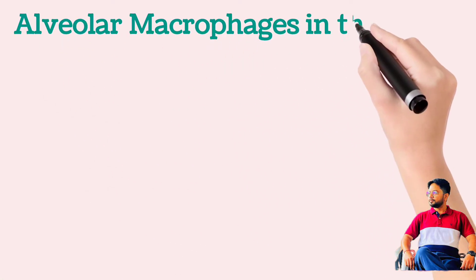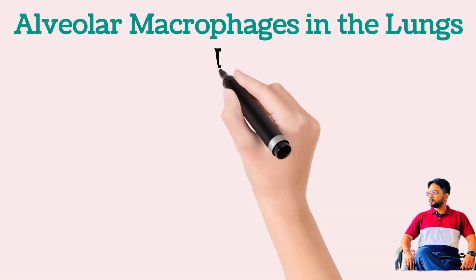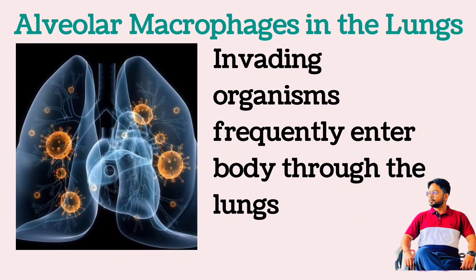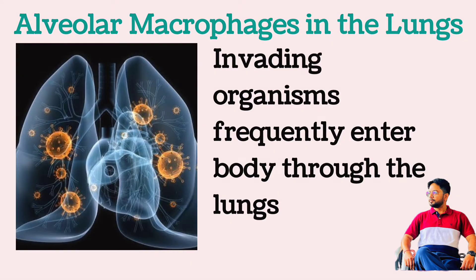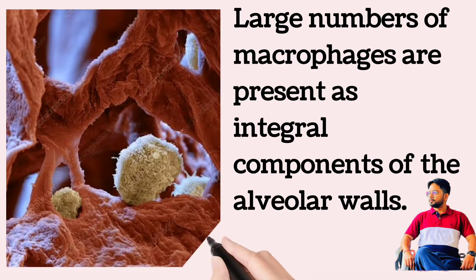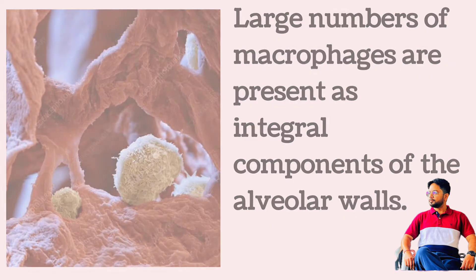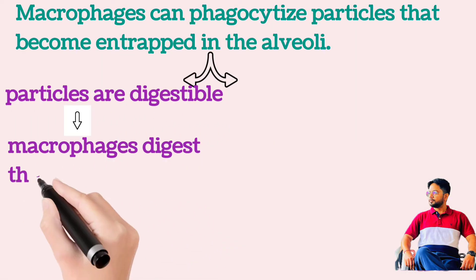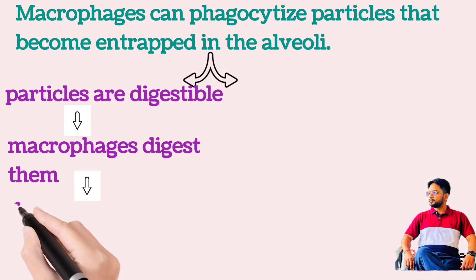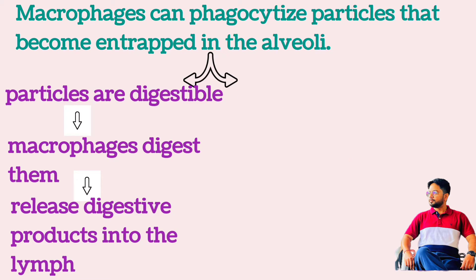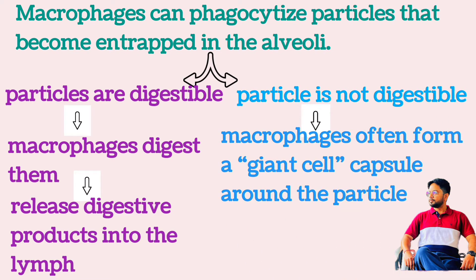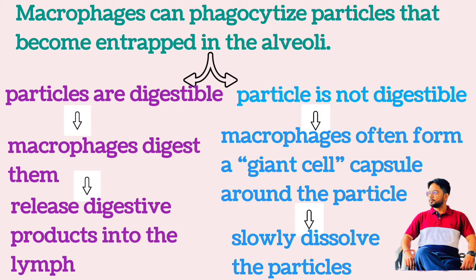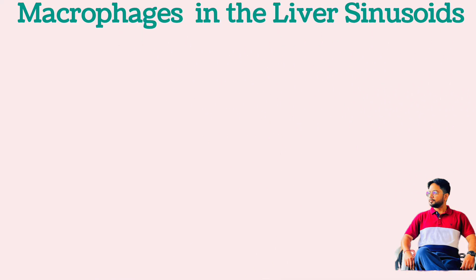Alveolar macrophages in the lungs: another route by which invading organisms frequently enter the body is through the lungs. Large numbers of tissue macrophages are present as integral components of the alveolar walls. They can phagocytose particles that become entrapped in the alveoli. If the particles are digestible, the macrophages can digest them and release the digestive products into the lymph. If the particle is not digestible, the macrophages often form a giant cell capsule around the particulate until such time that it can be slowly dissolved.